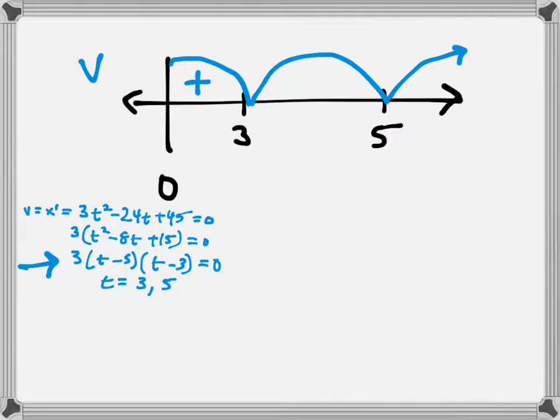If I plug in a number here, 4 is the obvious choice in the next interval. 3 times 4 minus 5 is negative, times 4 minus 3 is positive. So I have positive, negative, positive. The result of that multiplication will be negative. If I pick a number bigger than 5, let's say 10, somewhere out here, I'm going to have 3 times 10 minus 5, which is positive, times 10 minus 3, which is also positive. So 3 times plus times plus will give me a positive result.